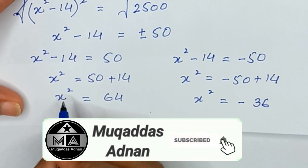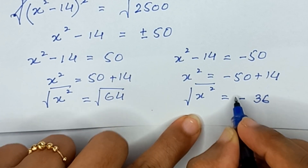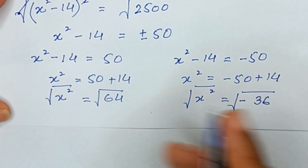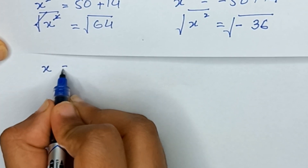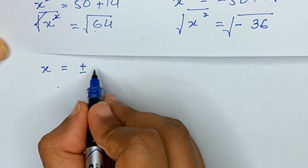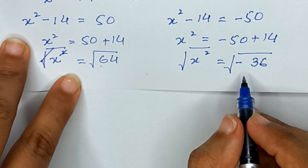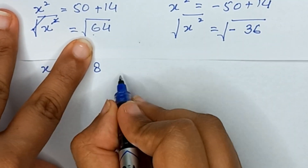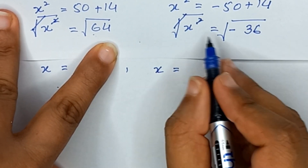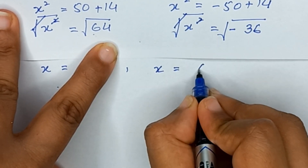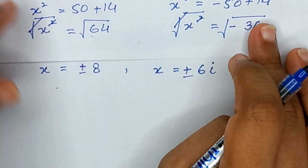Taking the square root of both sides for each case: from x squared equals 64, x equals plus or minus 8; from x squared equals minus 36, x equals plus or minus square root of 36 times square root of minus 1, which gives x equals plus or minus 6i.